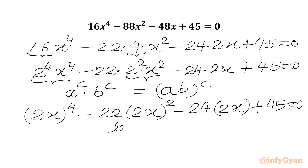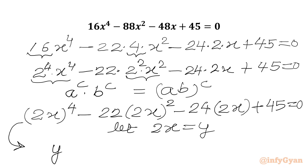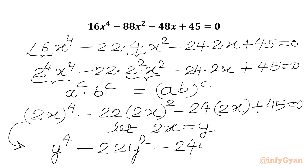Now we can use substitution. Let us say 2x equals y, so we will write our quartic in y: y⁴ minus 22y² minus 24y plus 45 equals 0.